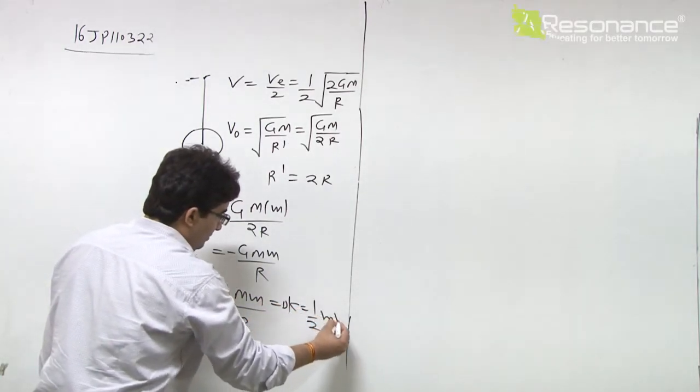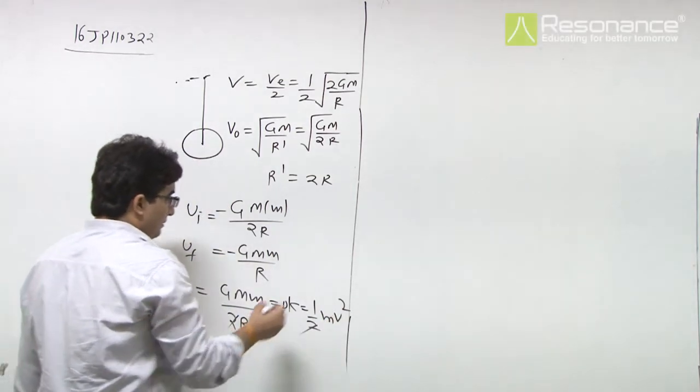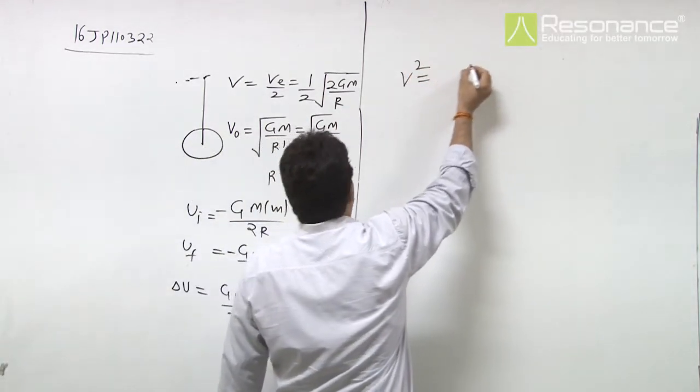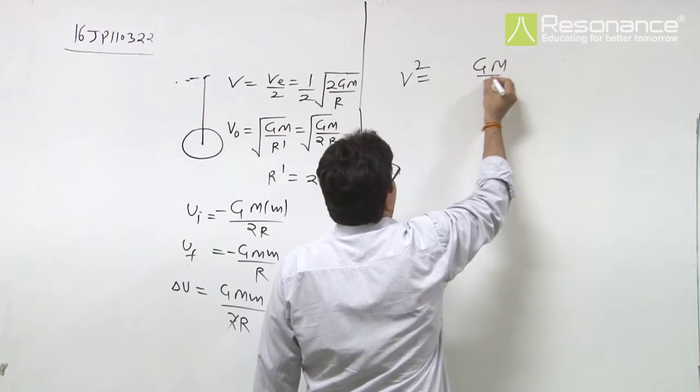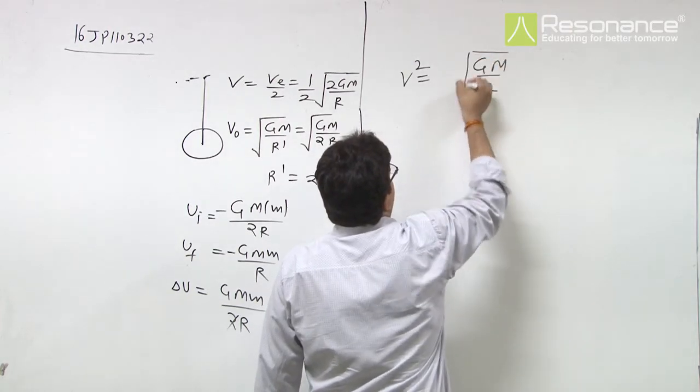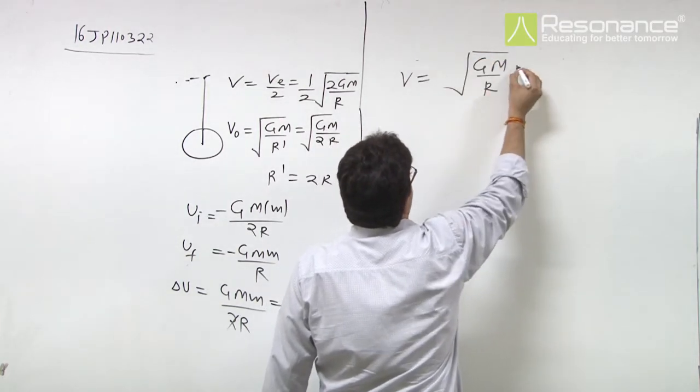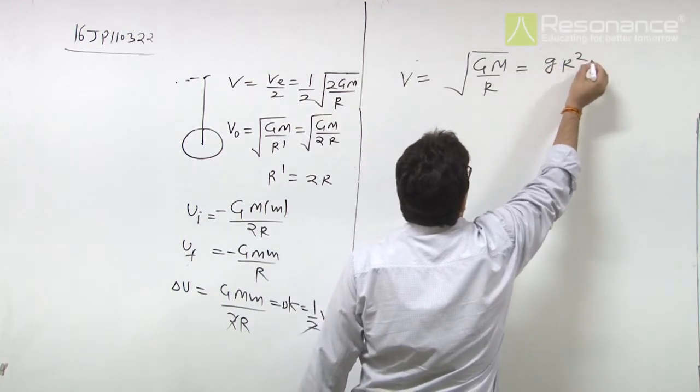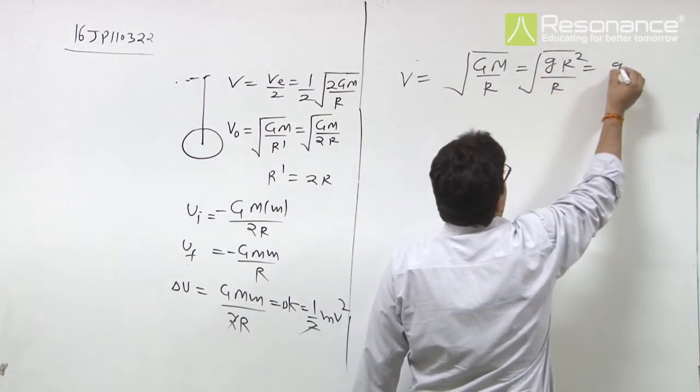That is ΔK = (1/2)mv². So v² = GM/r. We can write GM/r as gr² divided by r, which gives v² = gr. Therefore v = √(gr).